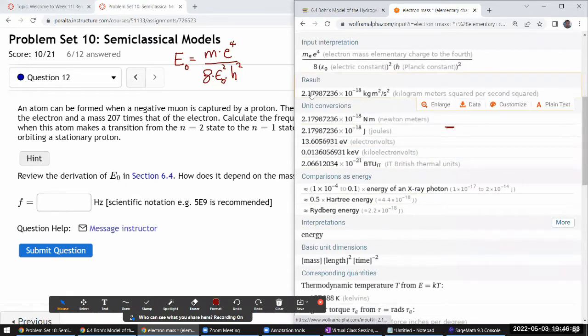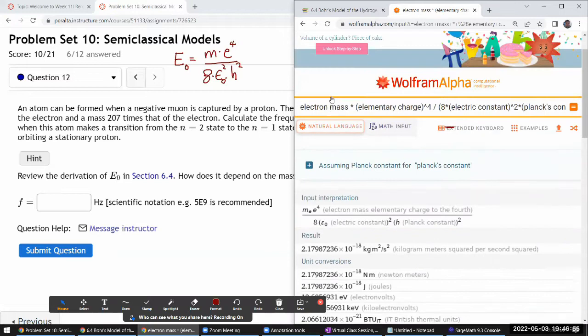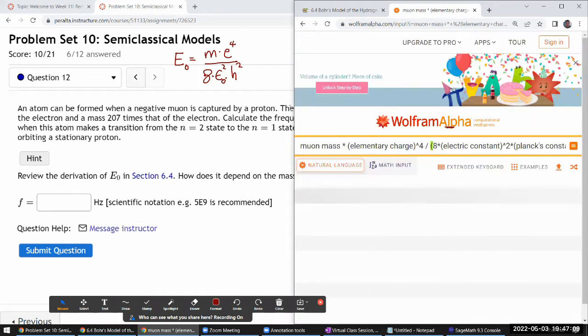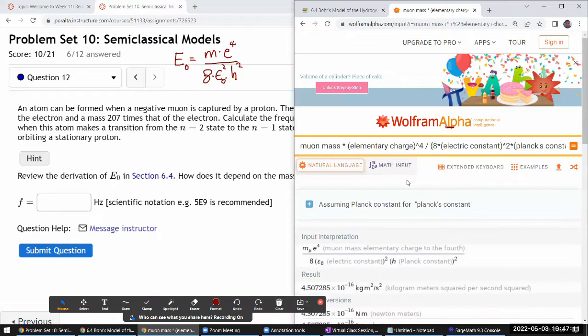To get the baseline energy for muonic atom that has electron replaced with a muon, well all you have to do is replace electron mass with a muon mass, or multiply by 207 for the mass.